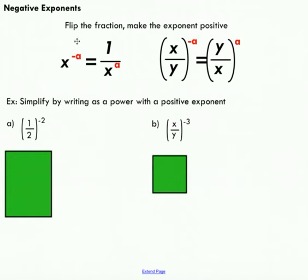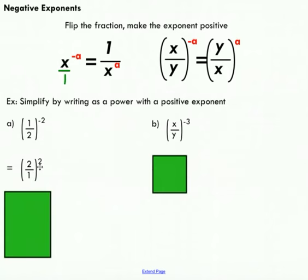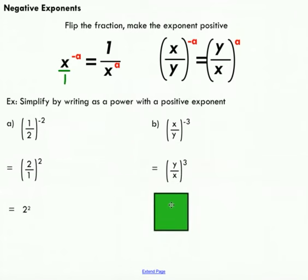The last exponent law involves negative exponents. In math, we prefer to write things with positive exponents. The rule says: take your base, write it as a reciprocal — flip it — and make the exponent positive. So x to the power of negative a, written as x over 1, gets flipped to 1 over x with a positive exponent. If you have a fraction like x over y, just flip it to y over x and make the exponent positive. For the example, 2 to the negative 2: flip it to 1 over 2, then write it as 1 over 2 to the power of 2, or simply 2 to the power of 2 in the denominator.